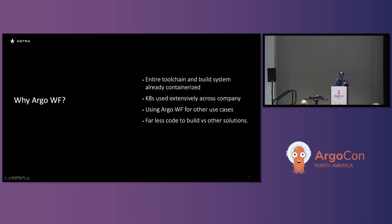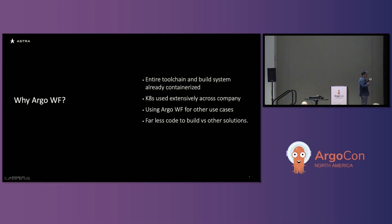Why did we choose Argo Workflows? Our entire toolchain and build system was already containerized. All the software we build in-house, all the CLI tools, all the API clients — everything is basically already built and shipped in containers. Even when we need to get firmware onto the rocket, which doesn't run Docker or Kubernetes, the image lives in a Docker image that goes into a system capable of updating it. It wasn't a big leap to go from people running containerized tools to mapping that to a workflow system like Argo where every step is effectively just a container. We also use Kubernetes quite a bit across the company already.